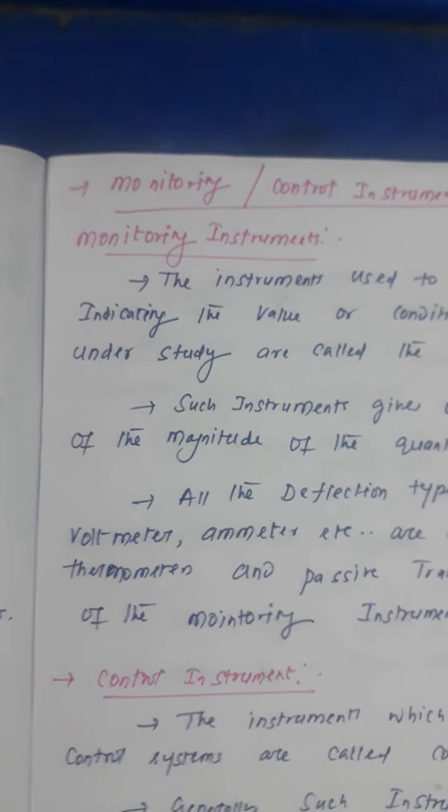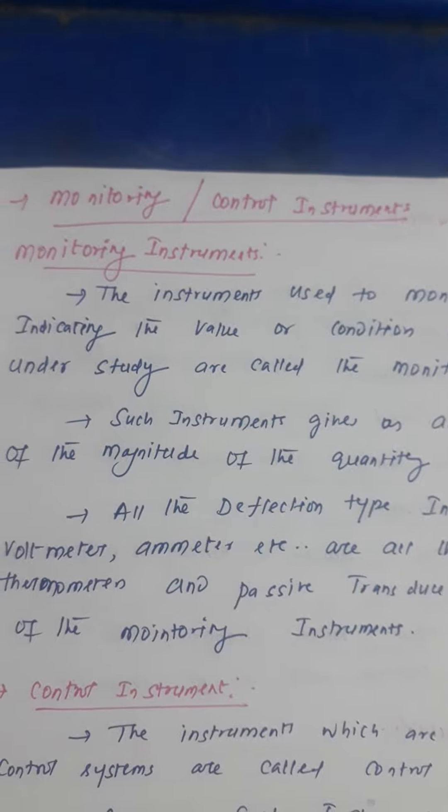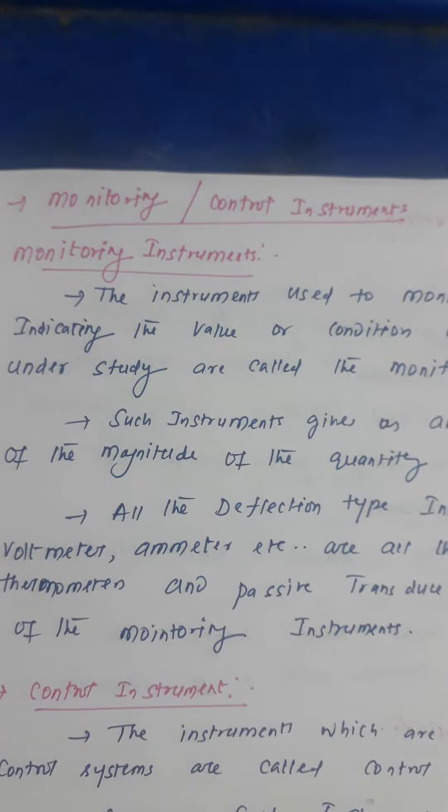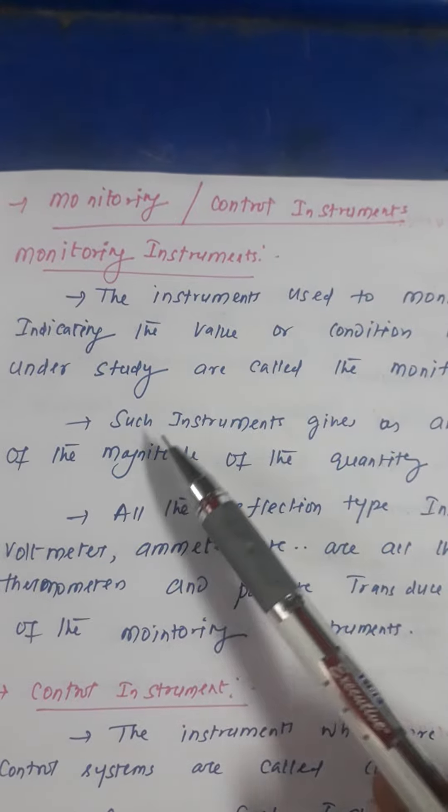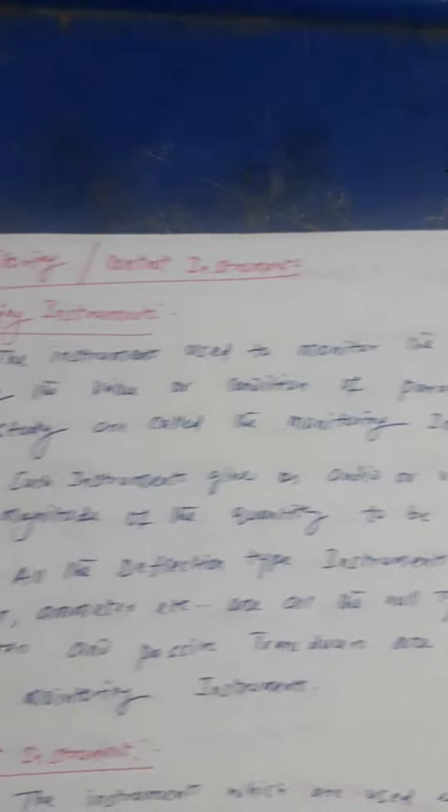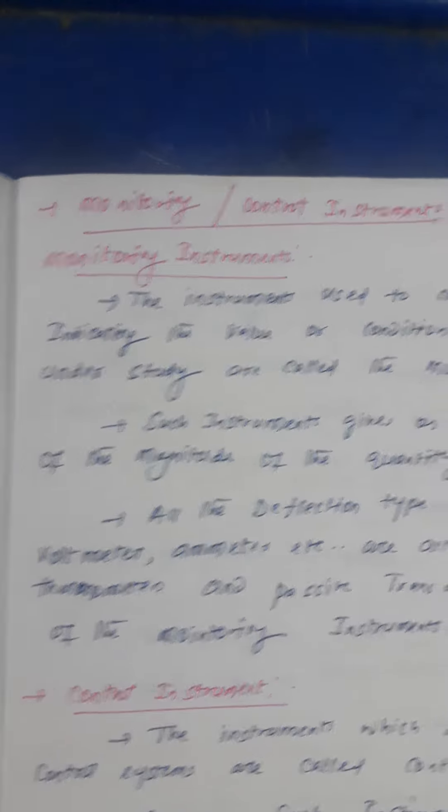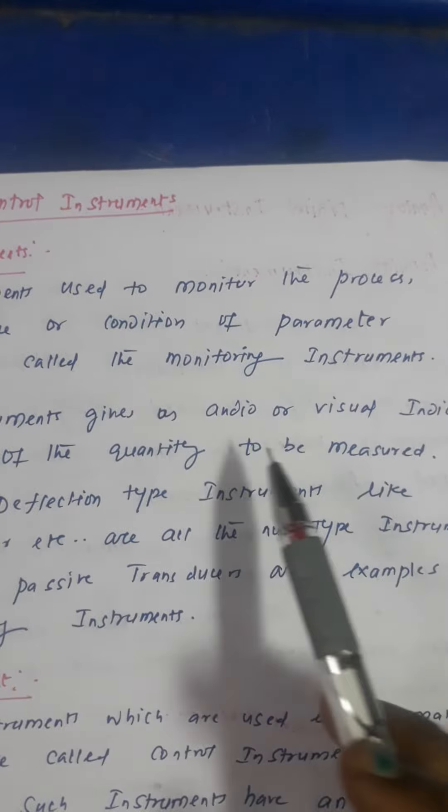Monitoring and control instruments. Monitoring instruments: whenever a process is going, you are going to record it and display it. The instrument used to monitor the process indicates the value or condition to be measured. Where you are going to see the output, audio or visual indications.